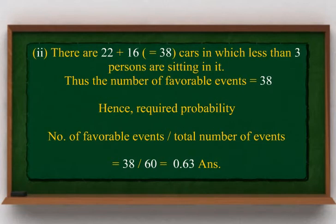There are 22 + 16 = 38 cars in which less than 3 persons are sitting. Thus, the number of favorable events is equal to 38. Hence, the required probability equals 38 divided by 60, which is equal to 0.63.